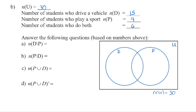In our next example, we have a class of 30 students. Surveying them: 15 students drive a vehicle, nine students play a sport, and six students do both. Before answering any questions, even though the problem doesn't say to, we know we need to create a Venn diagram. There are 30 students in the universal set, and since some students do both, we'll have intersecting circles.